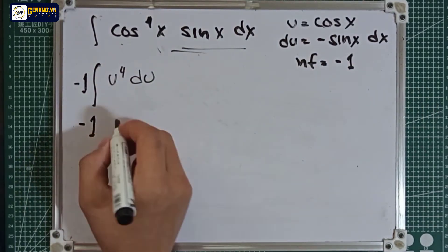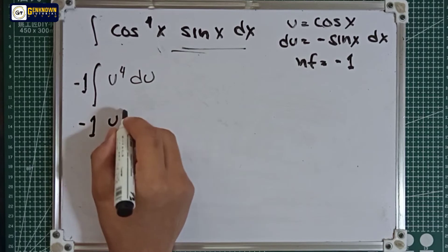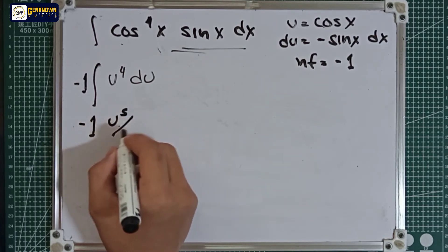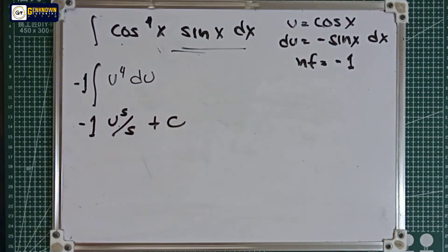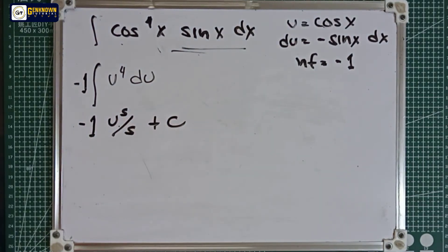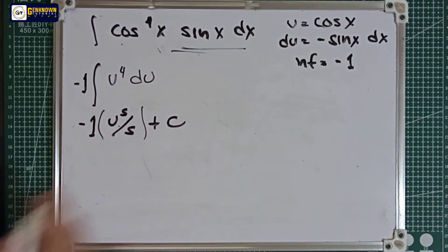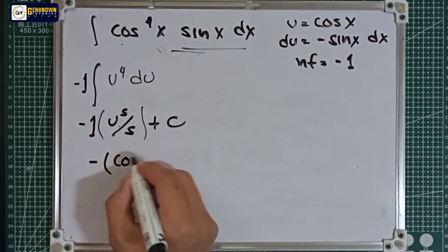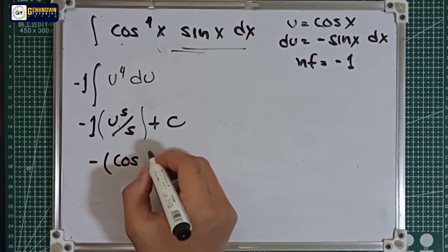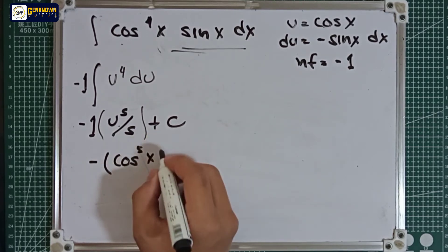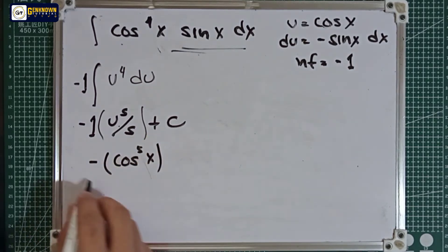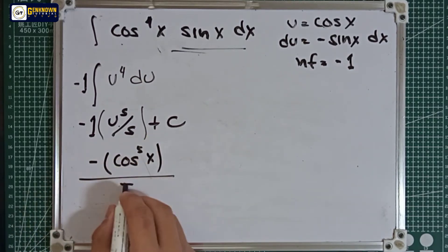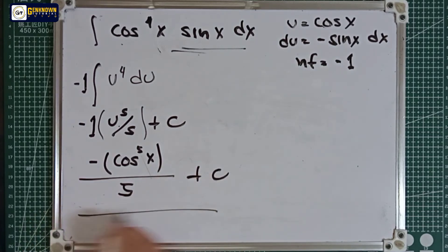Integrating, we have negative 1 multiplied by u raised to 5 over 5, plus the constant. Substituting back the value of u, the final answer is negative cosine x raised to 5 over 5, plus the constant. That is the answer to number 13.